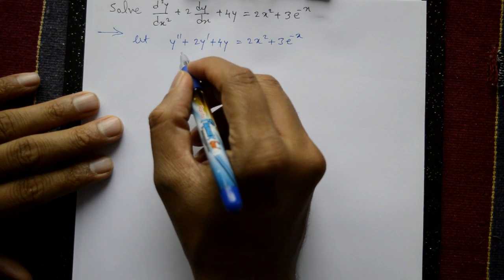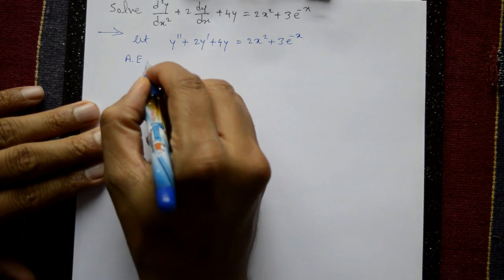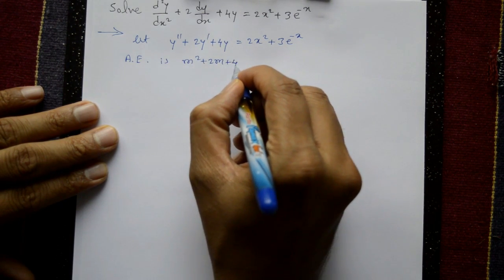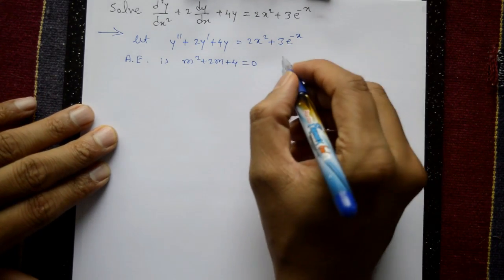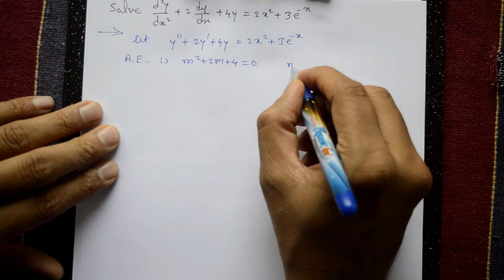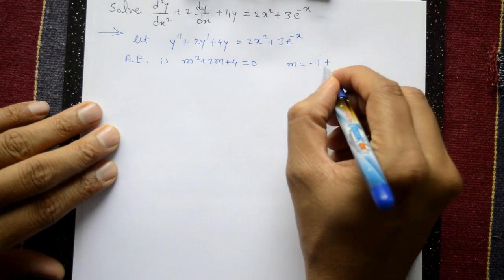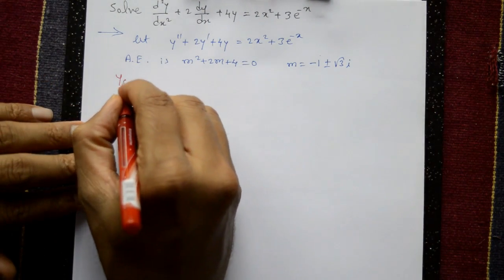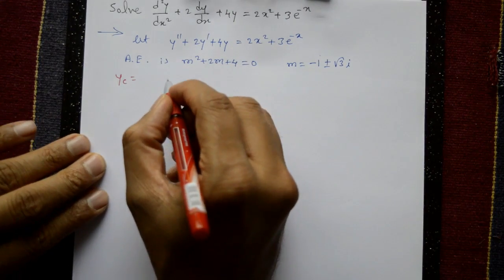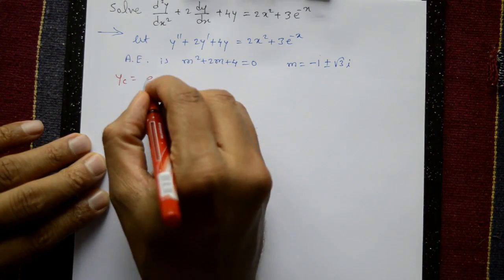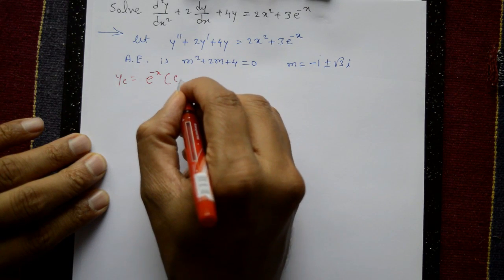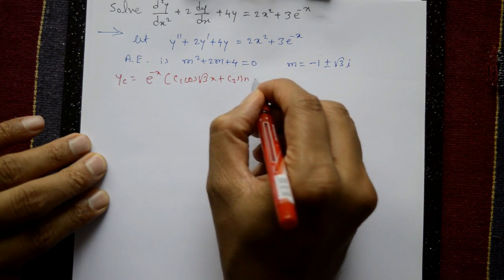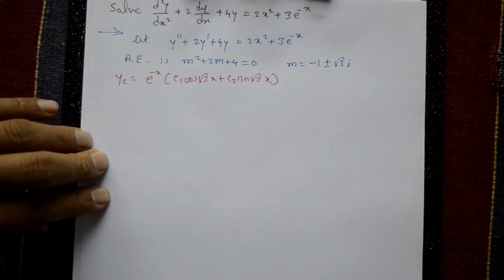First we find the complementary function. The auxiliary equation is m² + 2m + 4 = 0. This is a quadratic equation with complex roots: m = -1 ± i√3. Since roots are complex, the complementary function is: CF = e^(-x)(c₁cos(√3 x) + c₂sin(√3 x)).